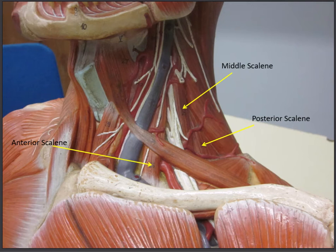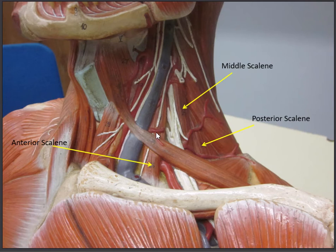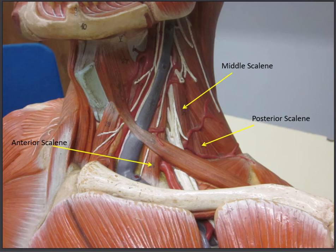An important clinical point: between the anterior scalene and the middle scalene, there is a large blood vessel called the subclavian artery. Also passing between these two muscles are the nerves of the brachial plexus. If a patient were to have an injury — like a bad whiplash — these muscles can swell and bleed, compressing the brachial plexus and the subclavian artery. This could result in a lack of blood supply or nerve supply going into the arm. We call that condition thoracic outlet syndrome — a very important clinical area, as these muscles can assist breathing and potentially compress the subclavian artery and/or the brachial plexus.